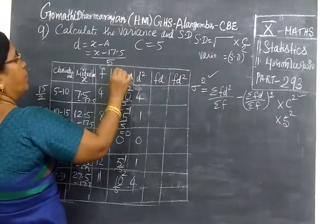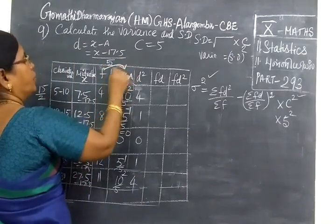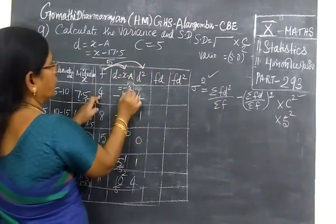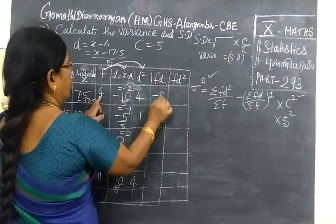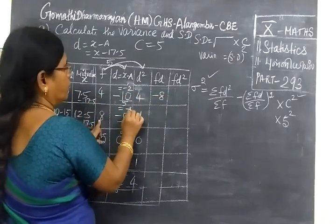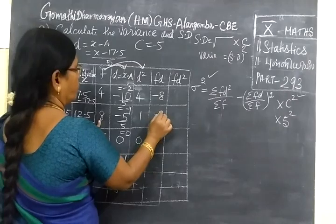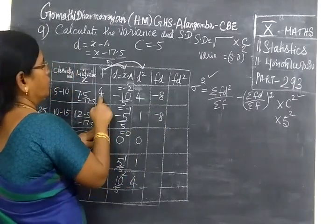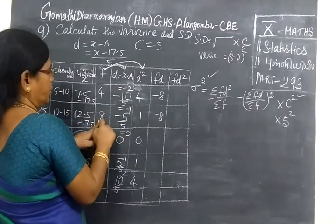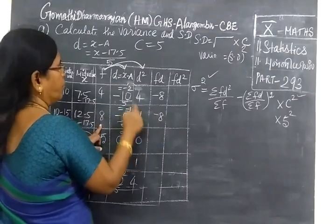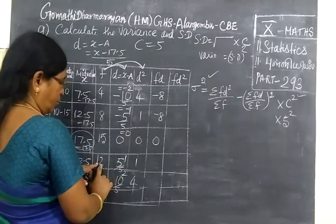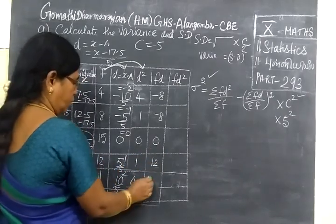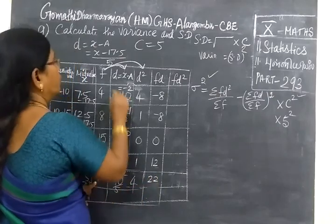Now multiply F by d to get the Fd column. 4 times minus 2 equals minus 8. Then 8 times minus 1 equals minus 8. Then 0. 12 times 1 equals 12. Then 11 times 2 equals 22.